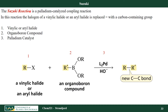The Suzuki reaction is a palladium-catalyzed coupling reaction — coupling meaning we're combining two R groups together to form a larger molecule. In this reaction, the halogen of a vinylic halide or aryl halide is replaced with a carbon-containing compound from an organoboron compound. So this halide is replaced with that R group to form this new molecule — I've coupled the two R groups together.